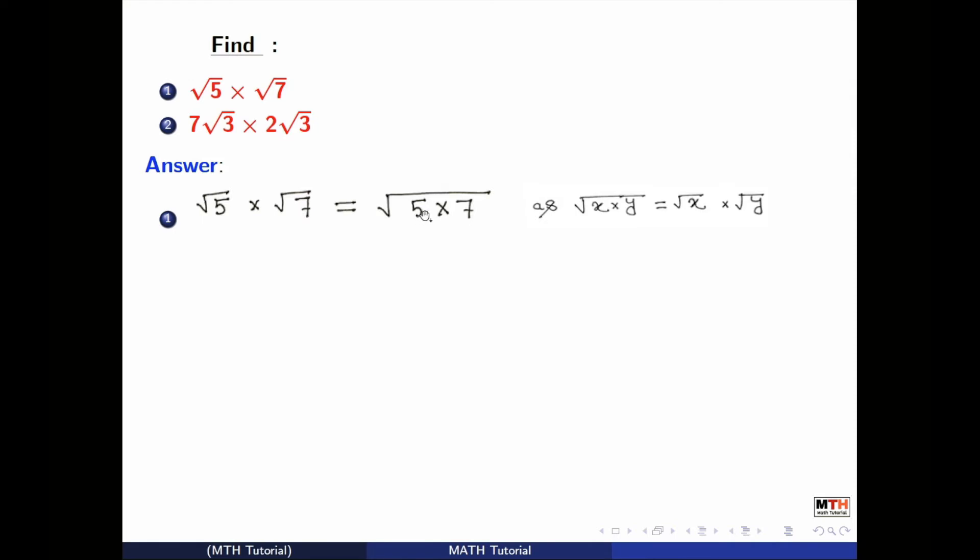And after multiplying we get square root of 35. So this is our answer. Let's move to the second example.